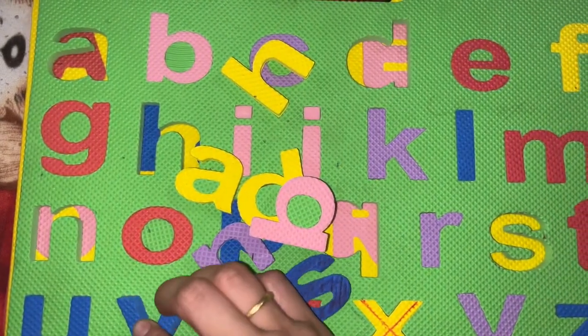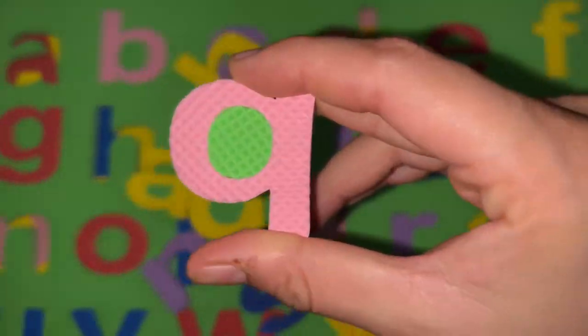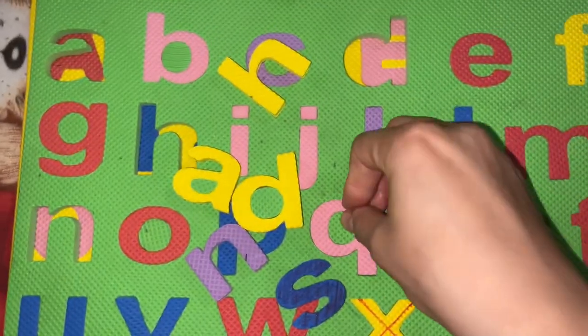The next one is letter Q, Q for queen and Q for cushions. We'll put it over here.